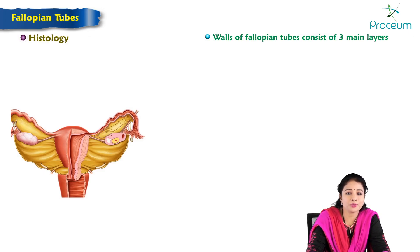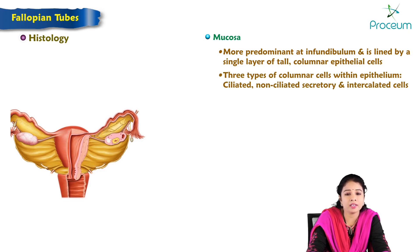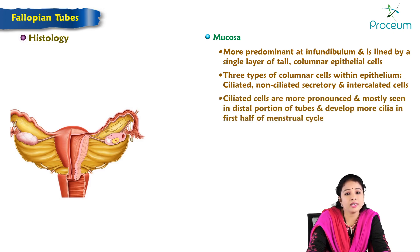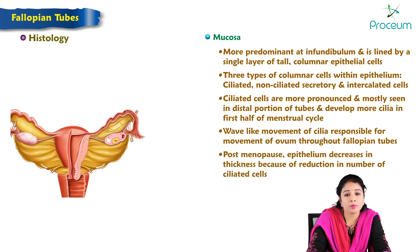The walls of the fallopian tubes consist of three main layers: the mucosa, muscularis, and serosa. The mucosa is most predominant at the infundibulum and is lined by a single layer of tall columnar epithelial cells. There are three types of columnar cells: ciliated, non-ciliated secretory, and intercalated cells. The ciliated cells are more pronounced in the distal portion and develop more cilia in the first part of the menstrual cycle. Their wave-like movement is responsible for movement of the ovum through the tube. Post-menopause, the epithelium decreases in thickness due to reduction in the number of ciliated cells.